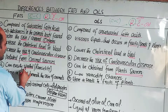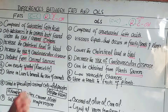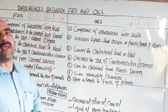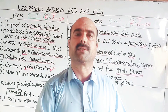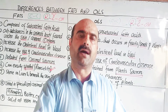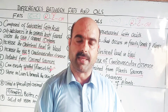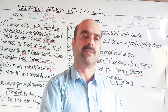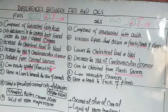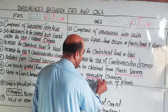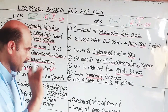Fats can easily be spoiled — they have a high rancidity chance. Rancidity refers to the spoilage of fats by microorganisms, and this process is known as rancidification. Examples include butter, cheese, milk, and ghee, which can all undergo rancidity. Microorganisms and atmospheric oxygen cause oxidation leading to rancidity — giving bad smell and taste. Oils, on the other hand, have a lower rancidity chance and are not as easily spoiled by microorganisms and atmospheric oxygen.